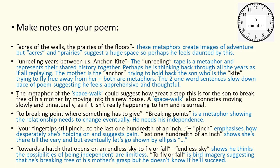You now need to make your own notes on your poem. I would definitely include everything on this slide. 'Acres of the walls, the priories of the floors' — these metaphors create images of adventure, but acres and priories suggest a huge space, so perhaps he feels daunted by this. 'Unreeling years between us. Anchor. Kite.' The unreeling tape is a metaphor and represents their shared history together. Perhaps he is thinking back through all the years as if replaying it. The mother is the anchor, trying to hold back the son who is the kite, trying to fly free away from her. Both are metaphors. The two one-word sentences slow down the pace of the poem, suggesting he feels apprehensive and thoughtful.